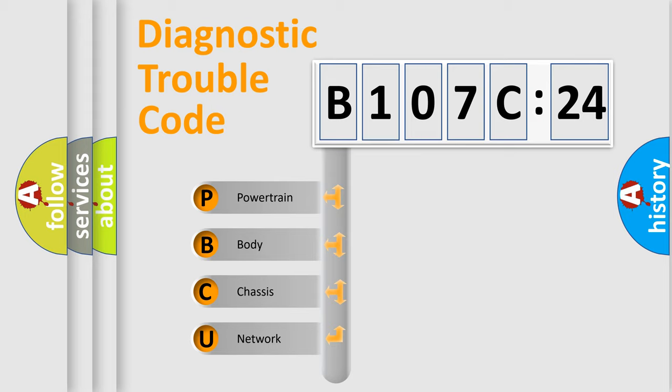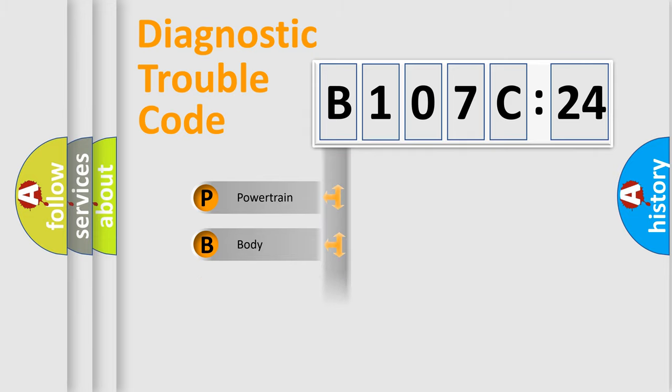We divide the electric system of automobile into the four basic units: Powertrain, Body, Chassis, Network.